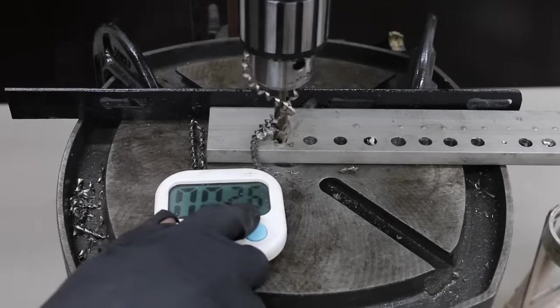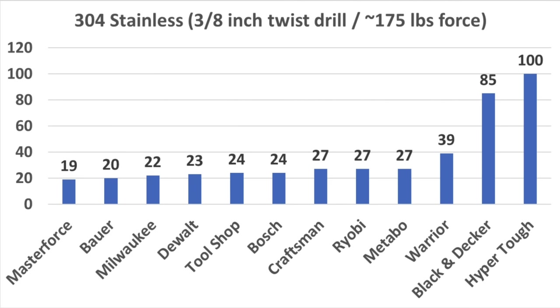24 seconds with the Bosch. Drill Presses provide a leverage advantage over just using a hand drill and applying 175 pounds of downward force on the 3/8 inch twist drill allowed most of the twist drills to make quick work of the 304 stainless. The Black and Decker struggled a little bit more than the competition and the HyperTuff just wasn't able to drill through the stainless.